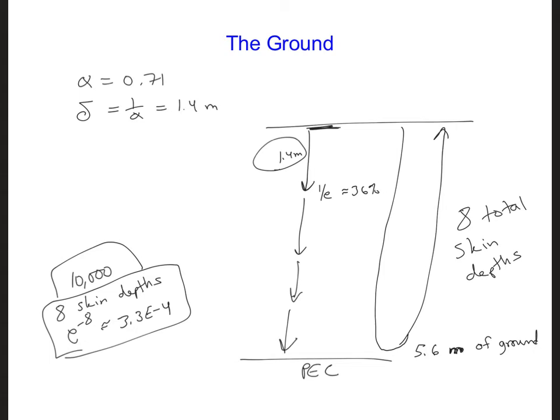Converted to grid cells, this is 5.6 meters divided by delta, which is about 1,300 grid cells.